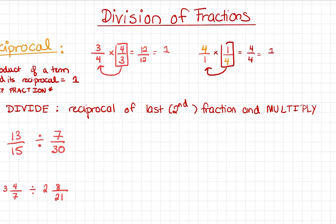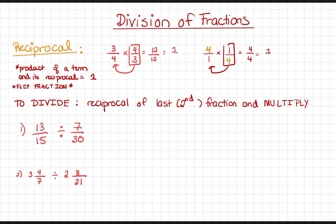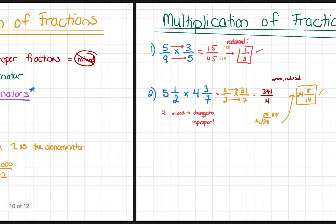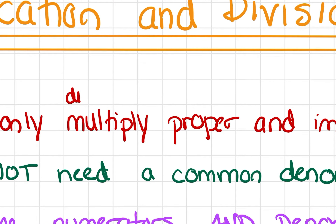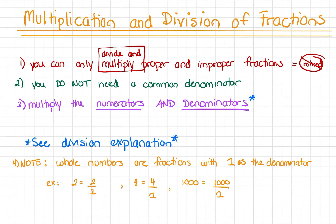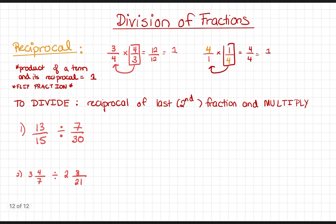Now why is that important? Because dividing actually requires you to flip the second fraction — find the reciprocal of the second fraction — and then multiply. So you're not actually dividing when doing division of fractions; you're multiplying, as long as you remember to flip the second fraction. All the other rules apply: you can only multiply and divide proper and improper fractions, you don't need a common denominator, and you're still multiplying numerators and denominators. The one extra step is flipping the second fraction before you multiply.